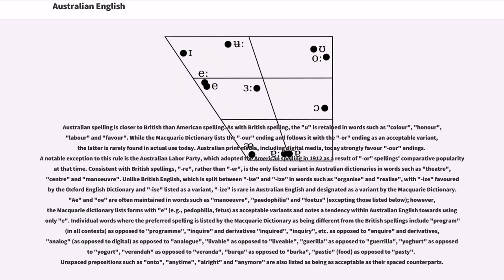Australian spelling is closer to British than American spelling. As with British spelling, the U is retained in words such as colour, honour, labour and favour. While the Macquarie Dictionary lists the -our ending and follows it with the -or ending as an acceptable variant, the latter is rarely found in actual use today. Australian print media, including digital media, today strongly favor -our endings. A notable exception to this rule is the Australian Labour Party, which adopted the American spelling in 1912 as a result of -or spellings' comparative popularity at that time.